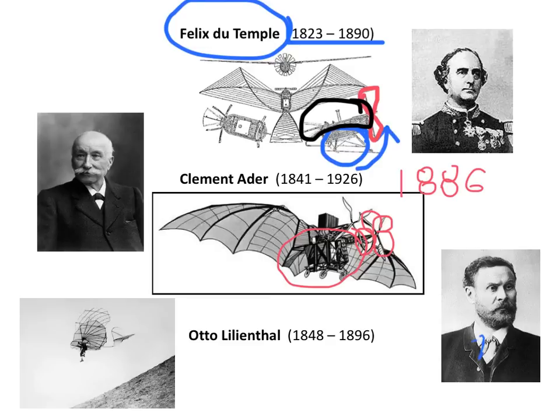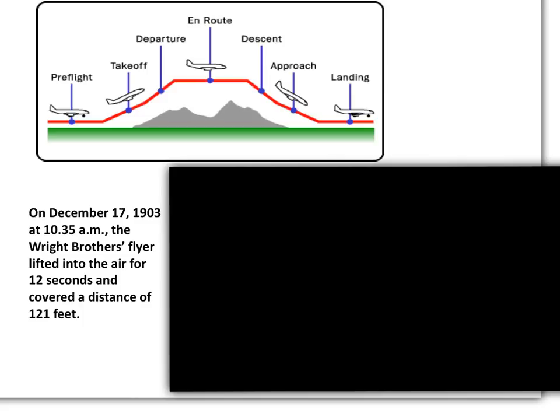Another pioneer of aviation was the German Otto Lilienthal. He was called the glider king, as he was the first person to make well-documented and repeated successful gliding flights. 1903 can be considered the beginning of modern aviation, when the Wright brothers made their first flight, lasting 12 seconds and covering a distance of 121 feet. But why is it the beginning of modern aviation?